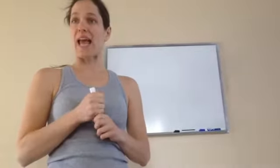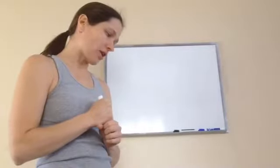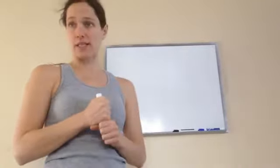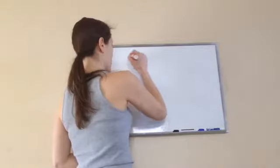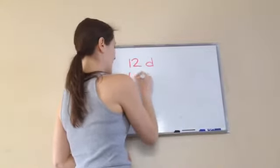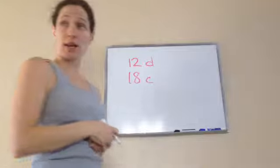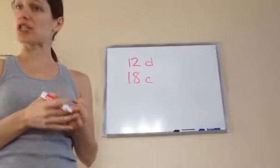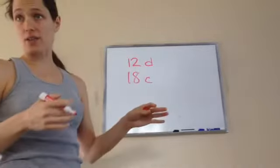If there are 12 dogs and 18 cats in a kennel, then the ratio of dogs to cats is what? So there are 12 dogs and 18 cats, and they want to know what the ratio of dogs to cats is.